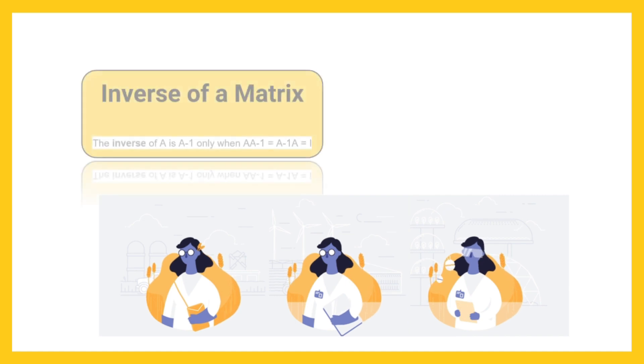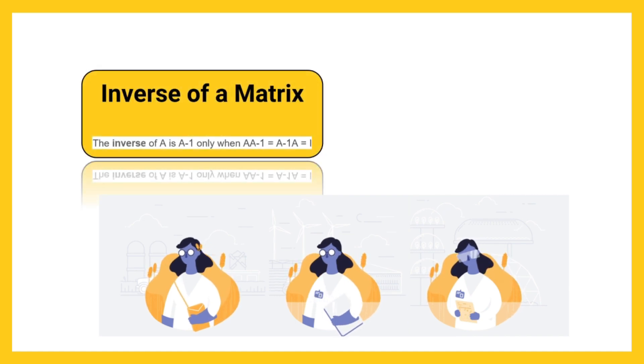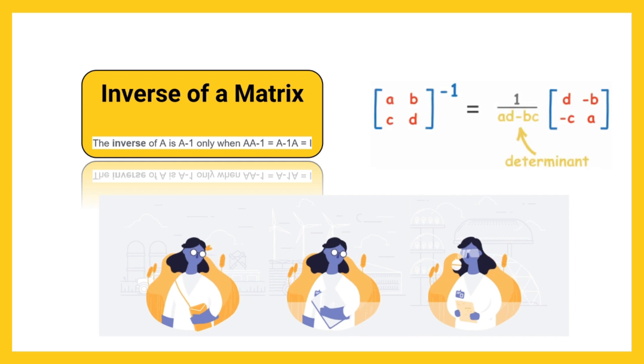Inverse of a matrix. If A and B are two square matrices of the same order such that AB equals BA equals I, where I is the unit matrix,